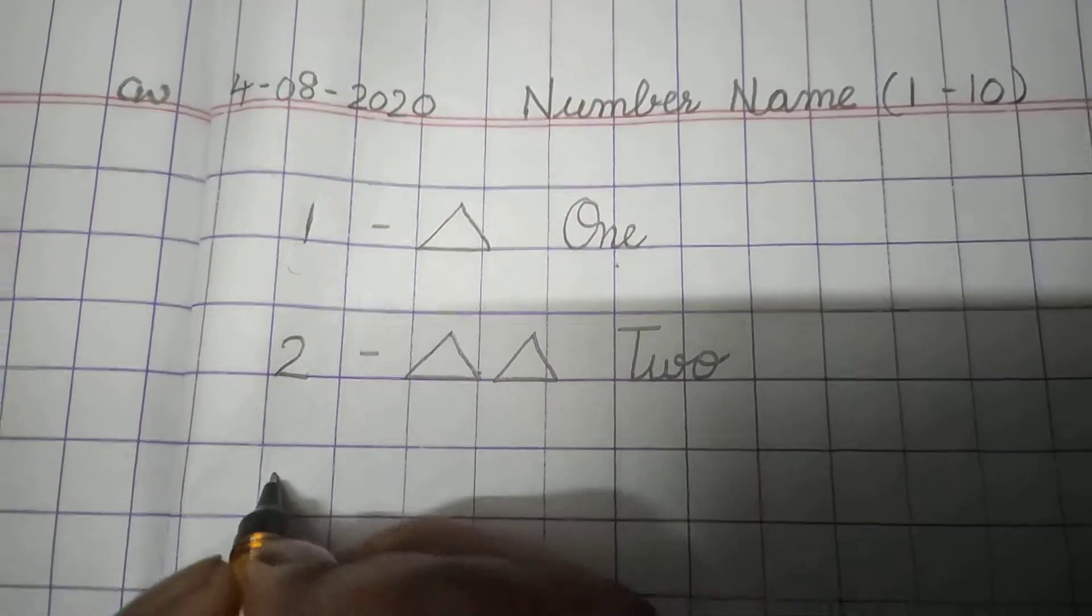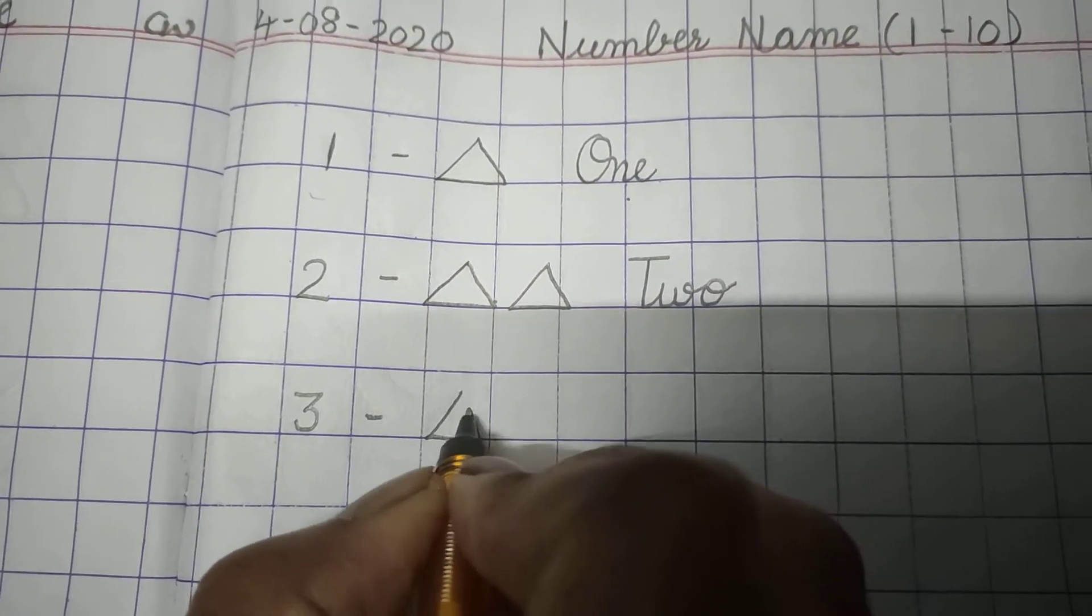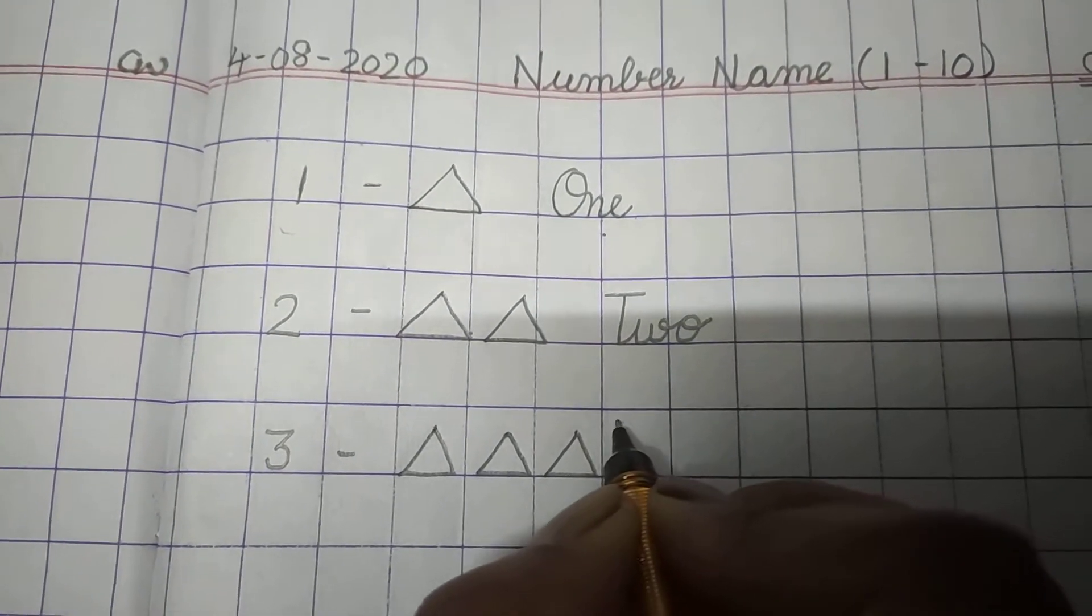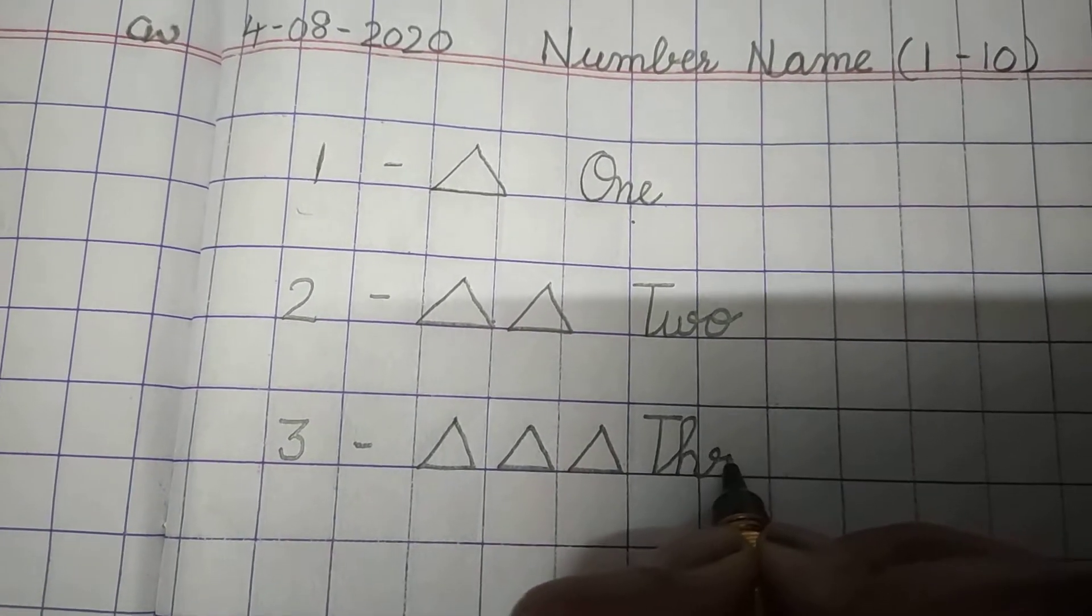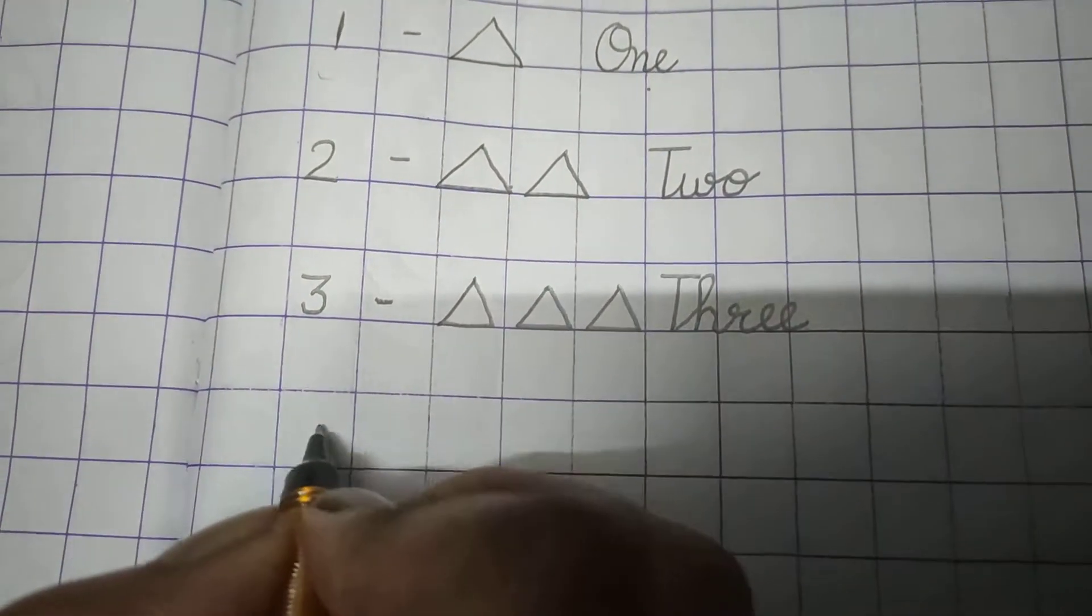Now 3. 3 triangles. 1, 2, 3. Now spellings: T-H-R-E-E, 3.